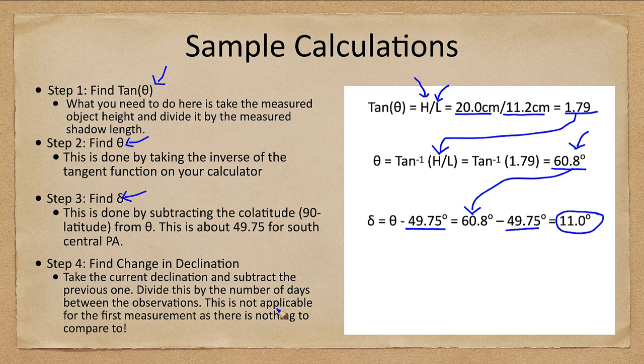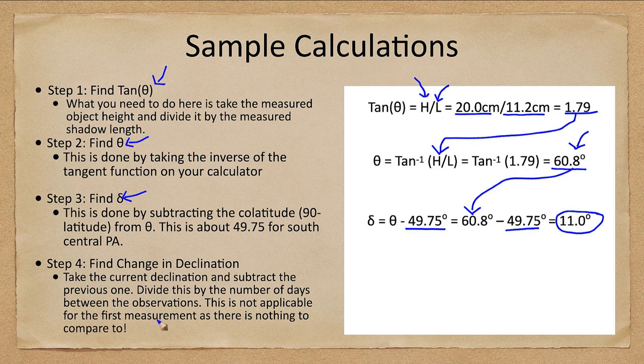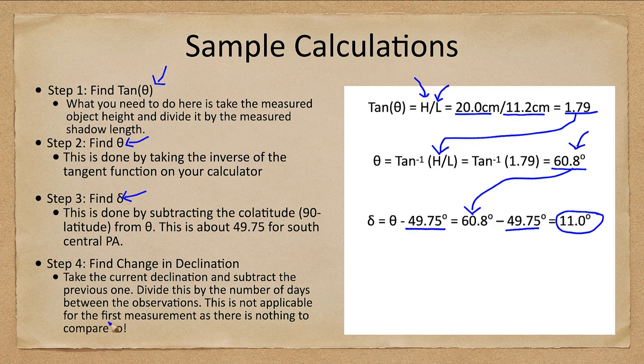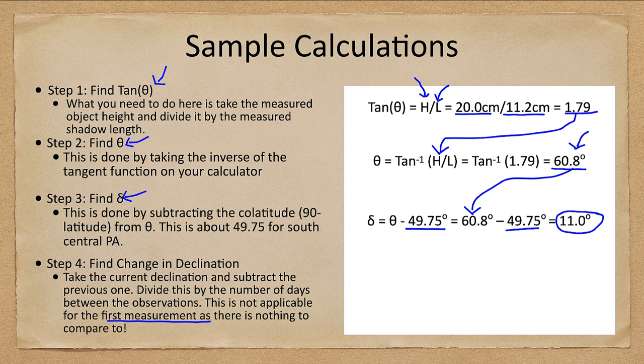This 49.75 is specific to south central Pennsylvania. As long as you're in one of the HACC regions around one of the HACC campuses, this will work fine for you. If you're much further away, especially further north or south, you may need to use a different number. The last step is not applicable for this first one. We want to find the change in declination, however there's nothing to compare it to since this is the first measurement.